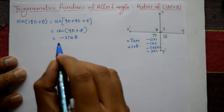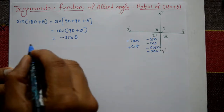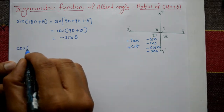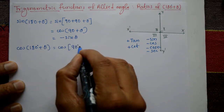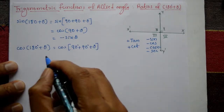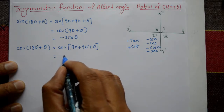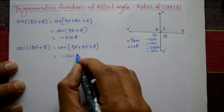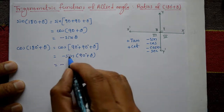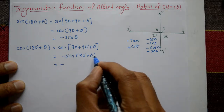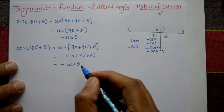This negative result matches our quadrant rule. Please check the previous video for how cos(90° + θ) is derived. Now the second one: cos(180° + θ). We write this as cos(90° + 90° + θ). cos(90° + (90° + θ)) changes to −sin(90° + θ), and sin(90° + θ) = cos θ. So cos(180° + θ) = −cos θ.